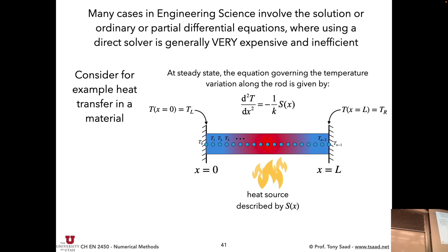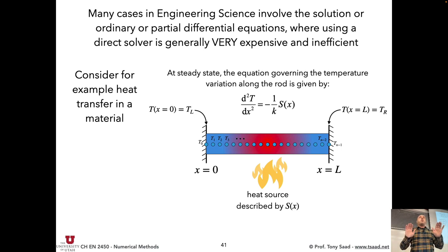The point of this exercise is to show that direct linear solvers — despite their convenience — should only be used for small systems of equations, on the order of 10 to 20 equations. For larger systems in engineering, more efficient specialized methods are needed, which is what we'll be learning next.